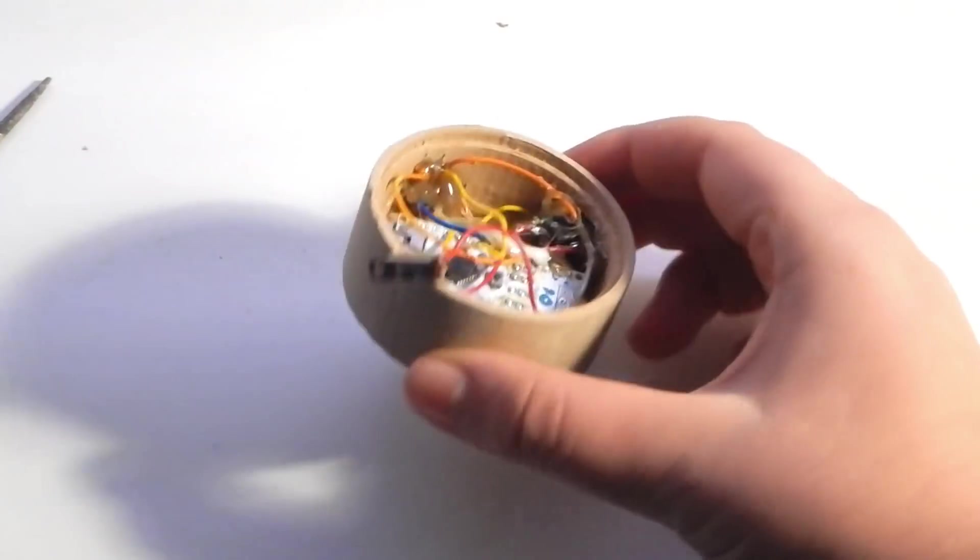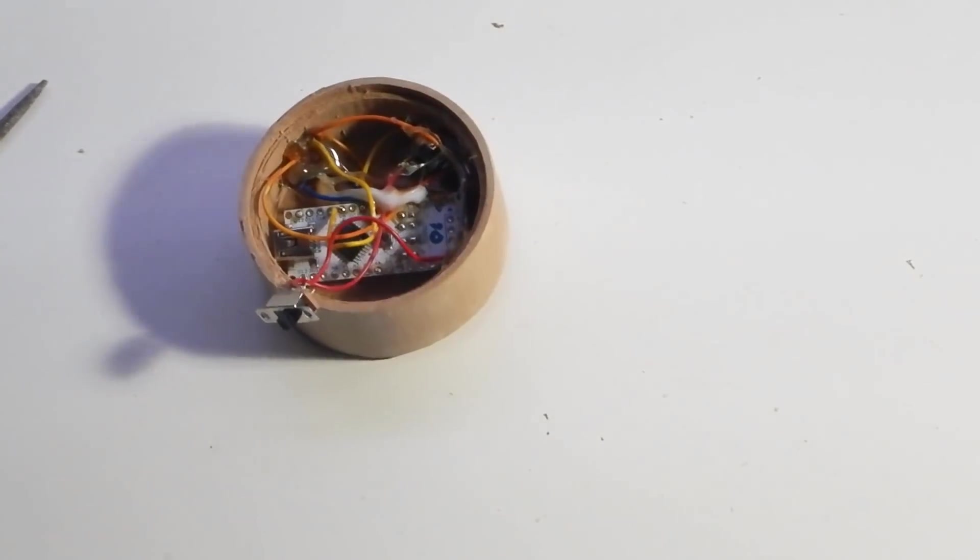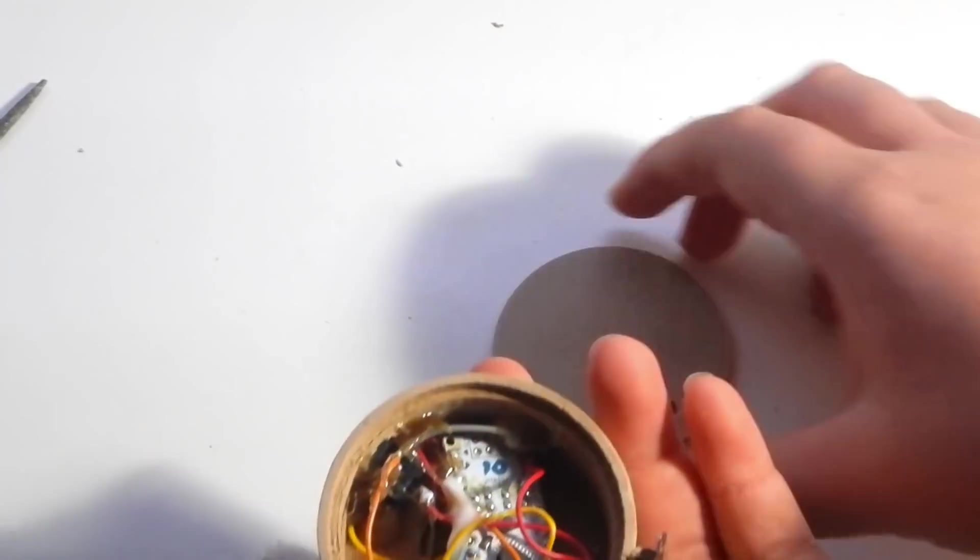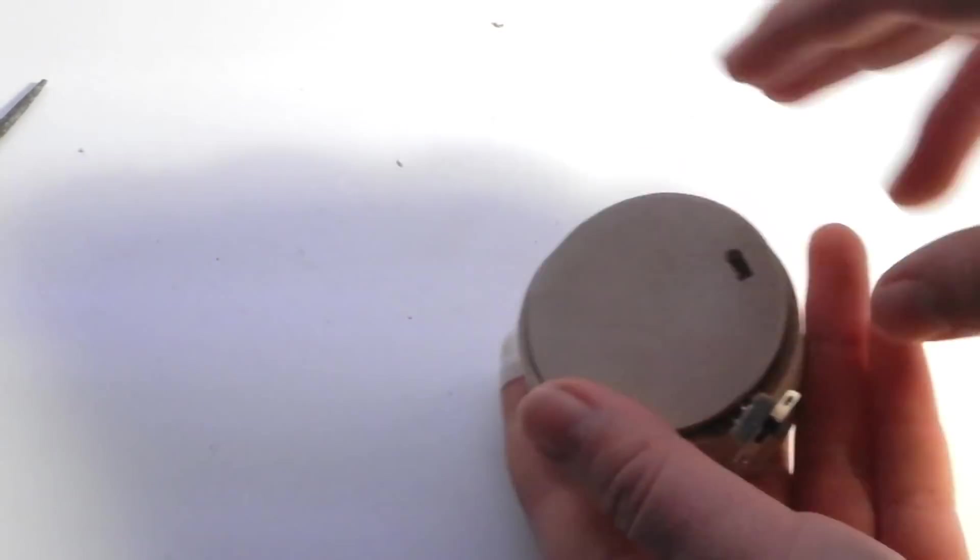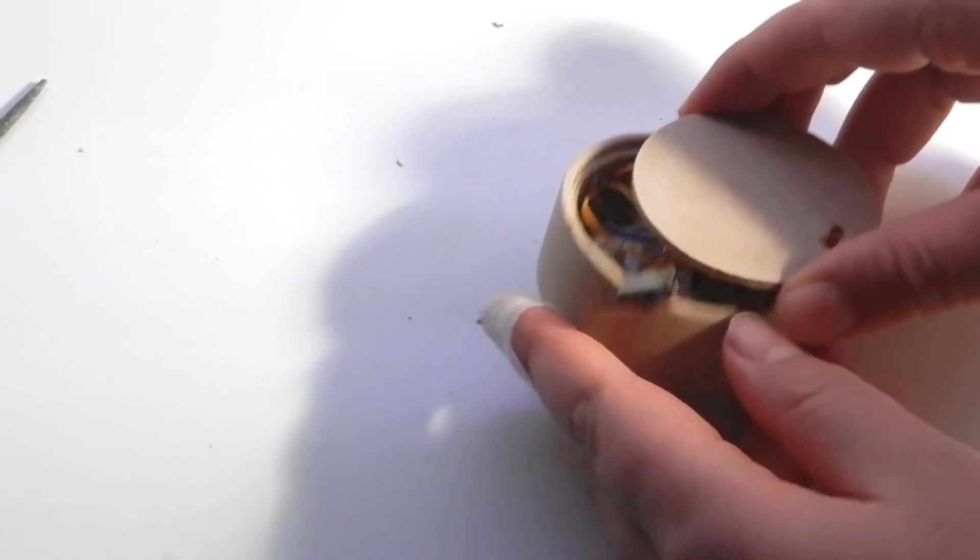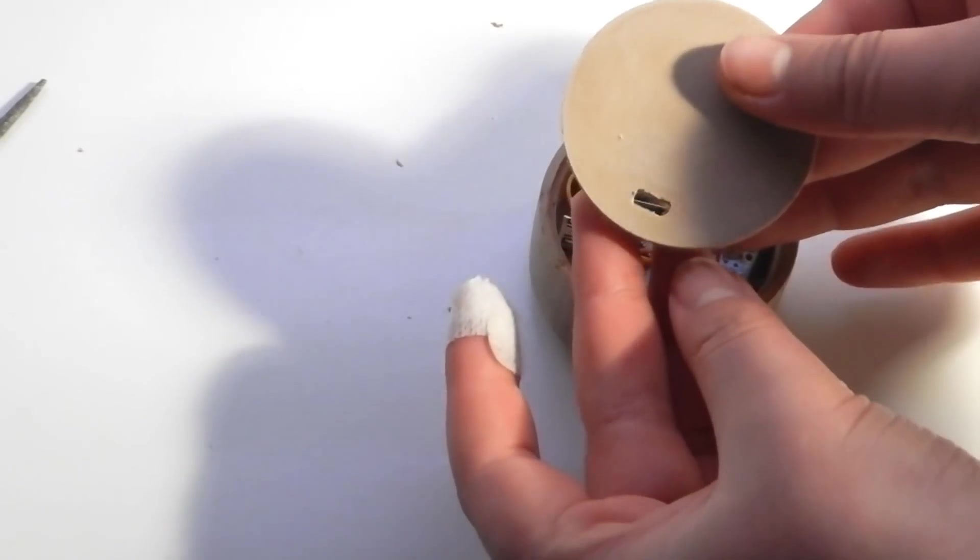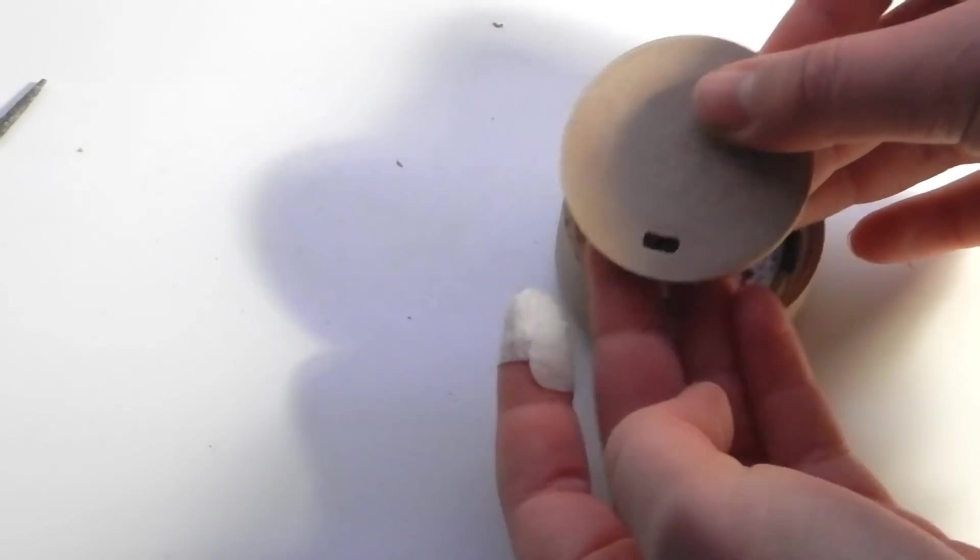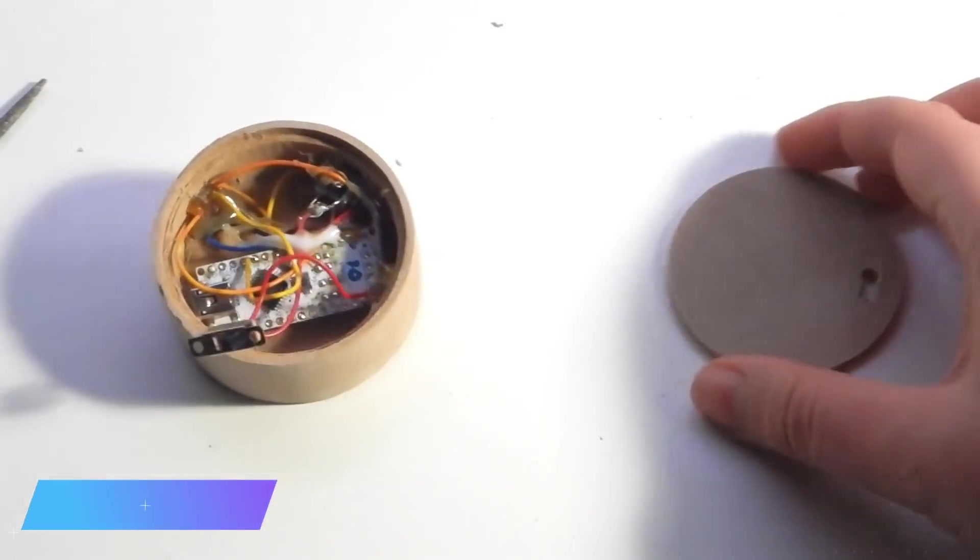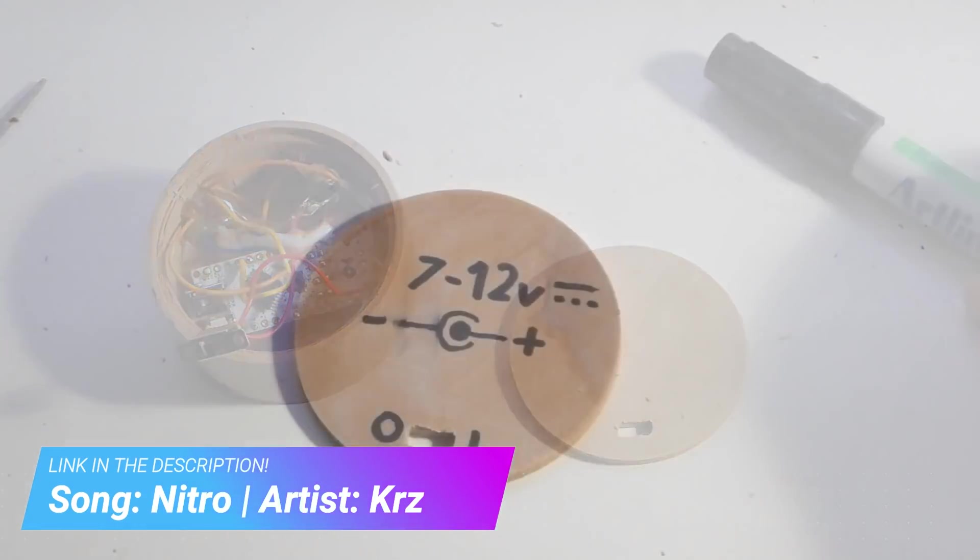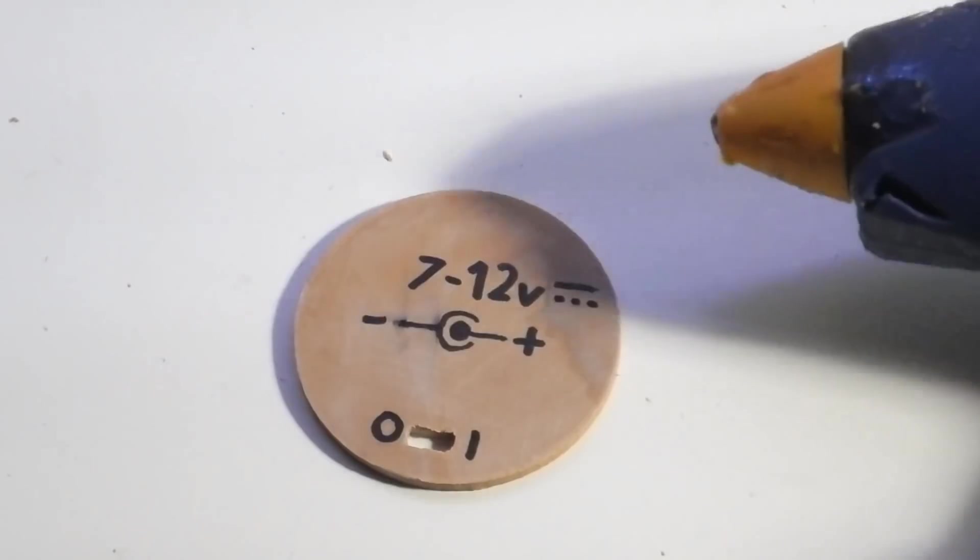I just switched to another color glue, so it's not pretty, but it's still very strong. I also printed the lid, but before we glue it together, I'm going to write some instructions. Alright, so now that the user knows how to power it, we can glue the button in place and glue the lid to the base.